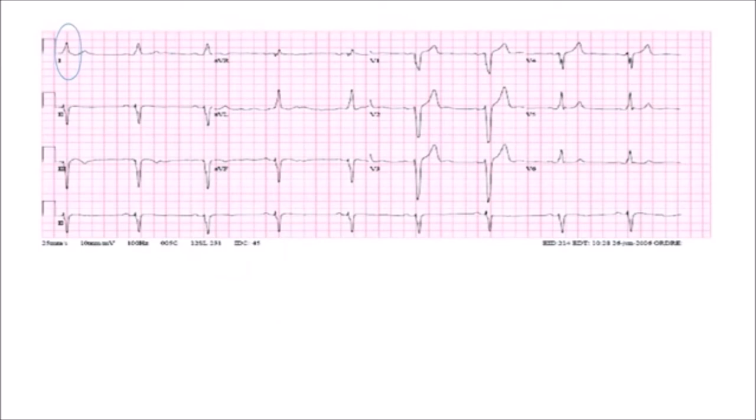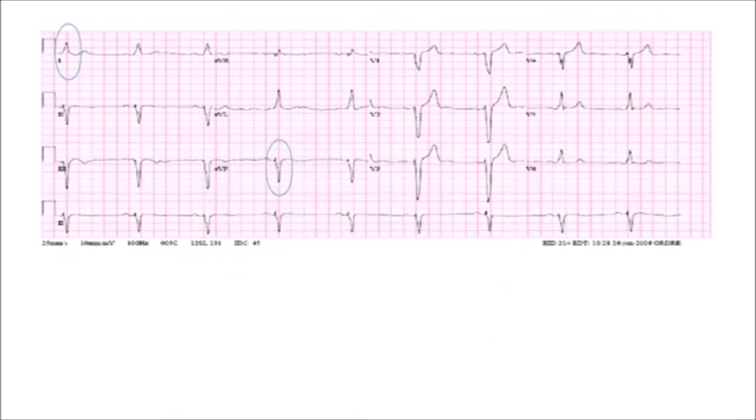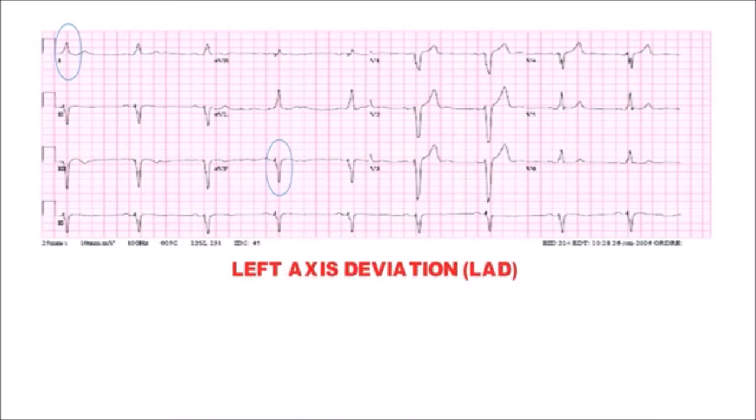Now look at this ECG. Net QRS in lead 1 is positive and net QRS is negative in avf. So this ECG showing left axis deviation or LAD.